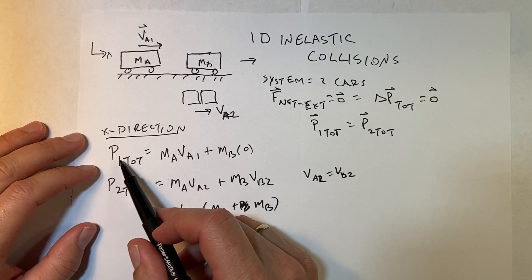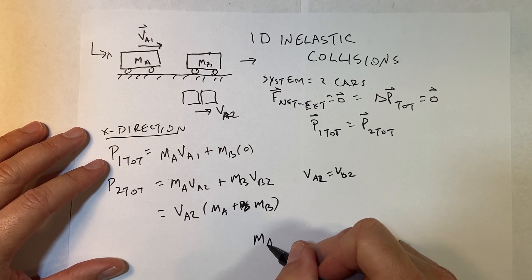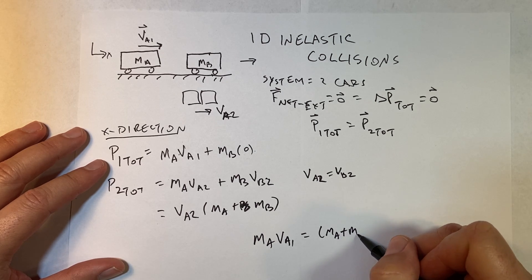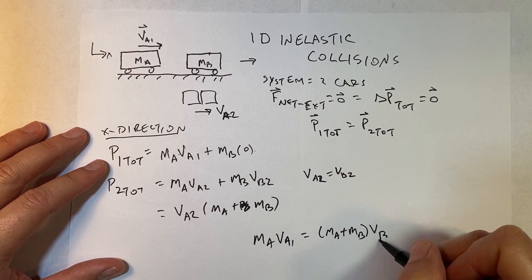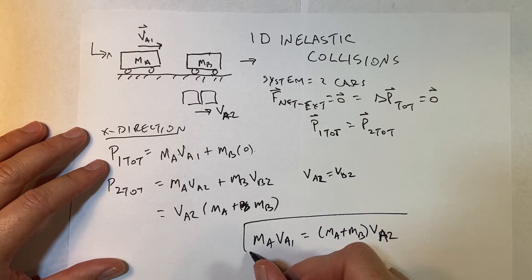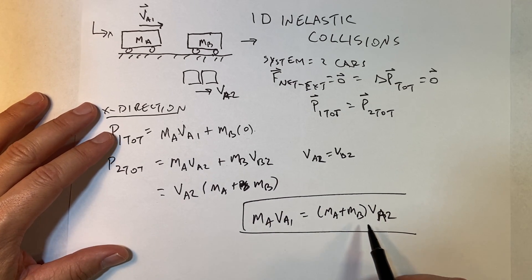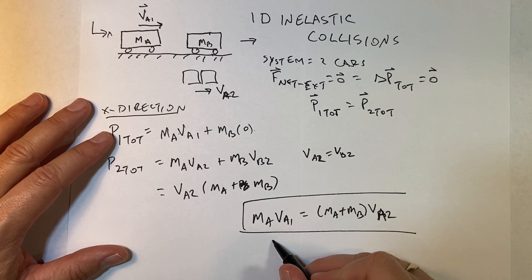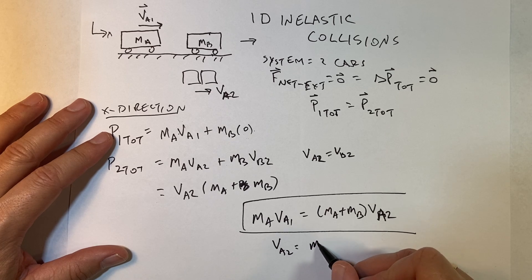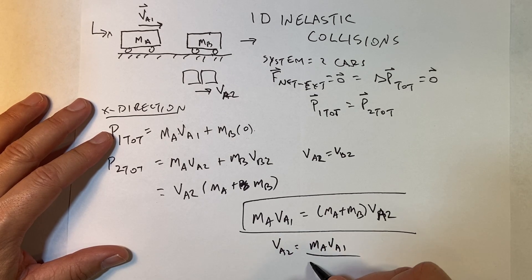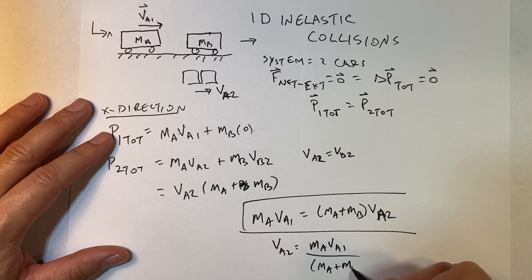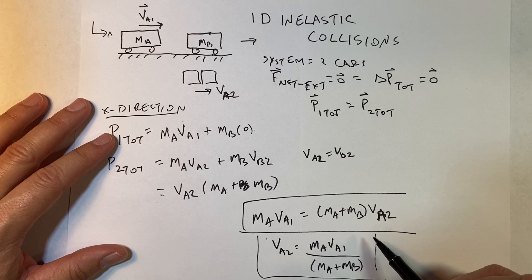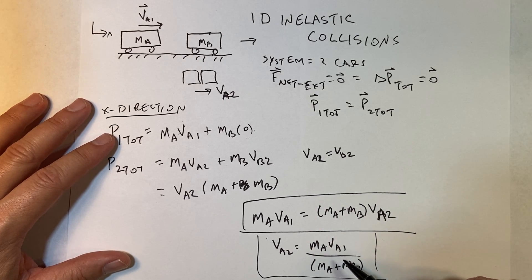Now I can set the initial momentum equal to the final momentum and I get m_A v_A1 equals m_A plus m_B times v_A2. I mean that's really it, but if I want to solve for the final velocity, I can divide both sides by m_A plus m_B. I get v_A2 equals m_A v_A1 divided by m_A plus m_B. And that is my final velocity if car B is at rest.